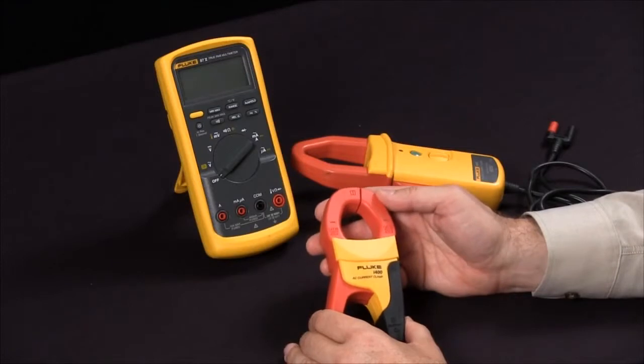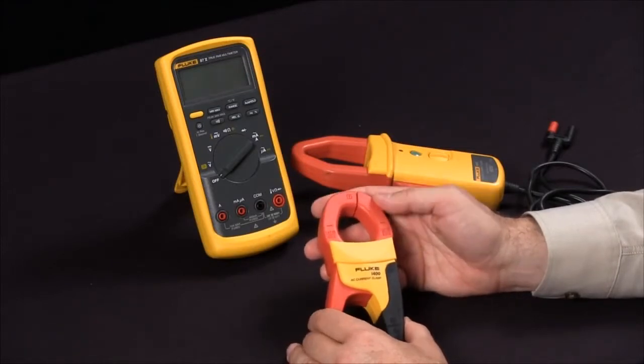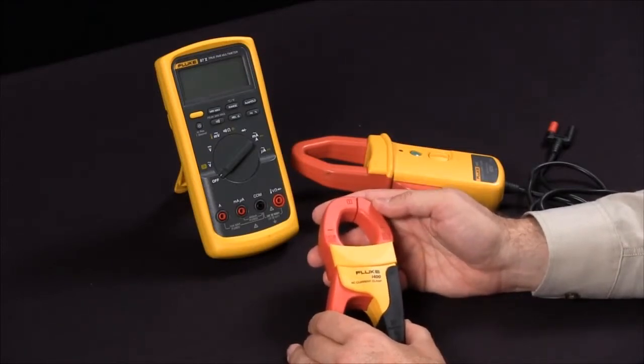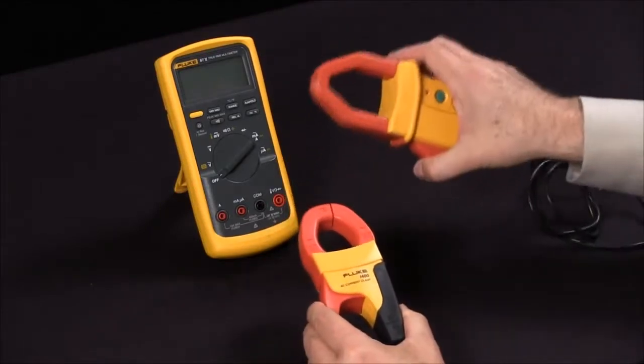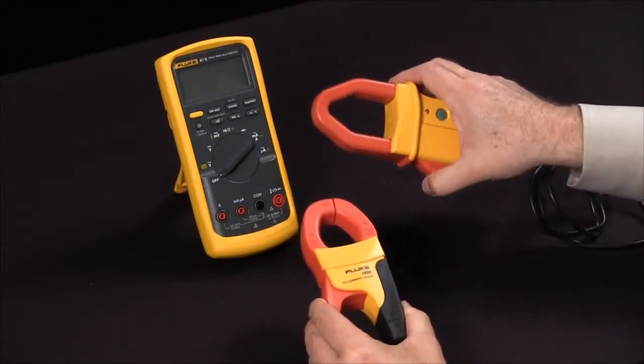Today I'd like to discuss one of the many ways you can extend the capabilities of your Fluke digital multimeter. At Fluke we have both AC as well as AC and DC current measuring capabilities.